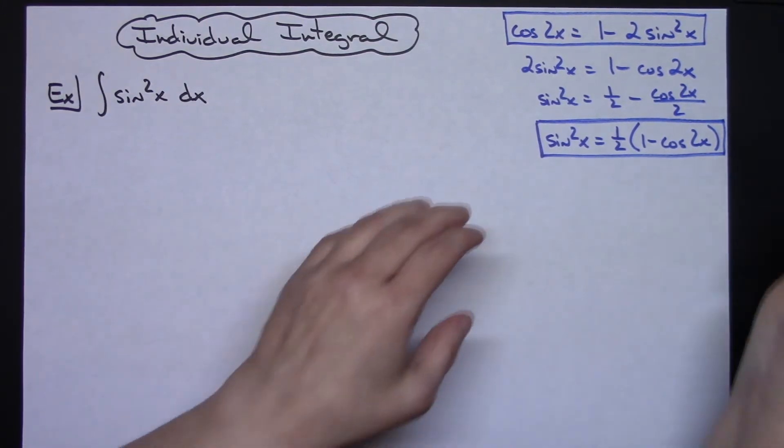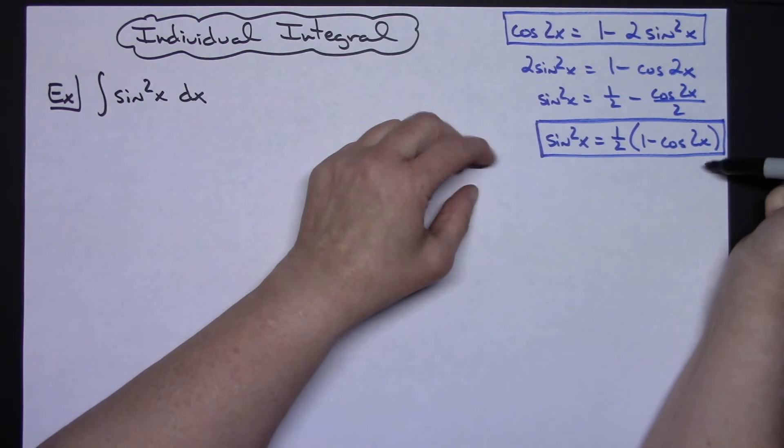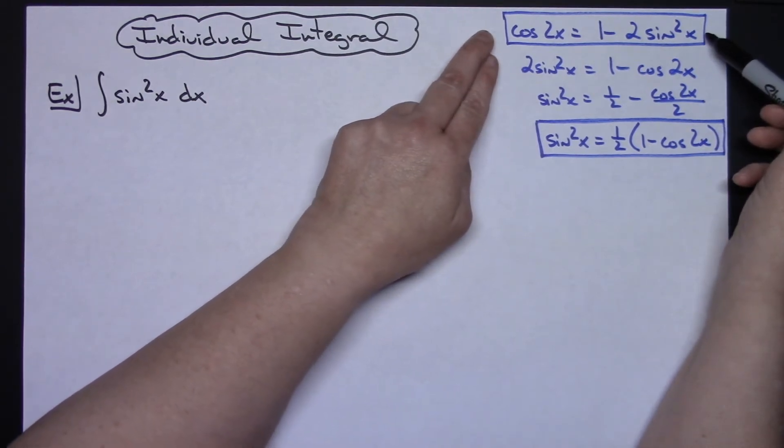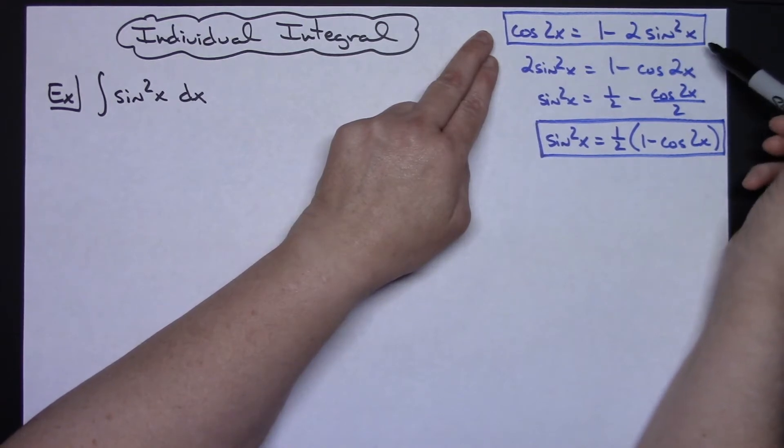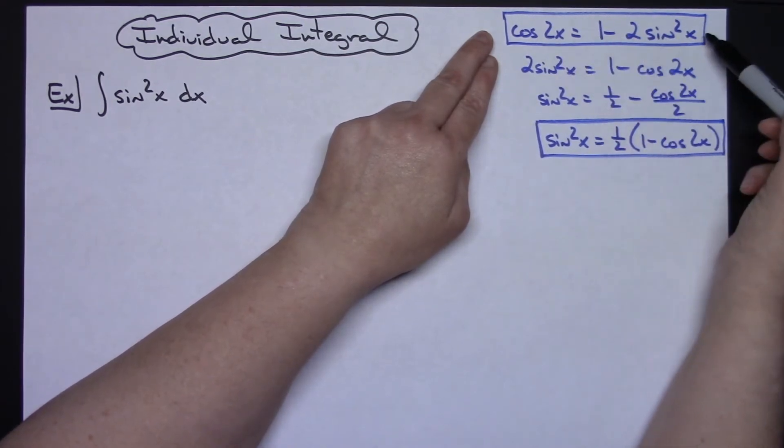Now before we get started on this, we're going to take a look at some identities here. I have a double angle identity, cosine 2x equals 1 minus 2 sine x quantity squared. That's a pretty common double angle formula.